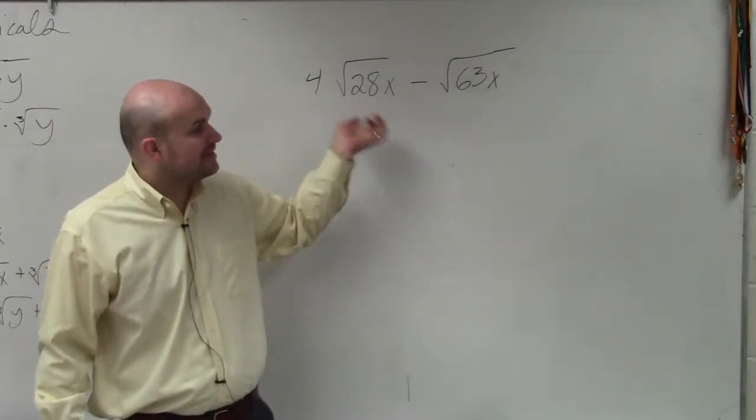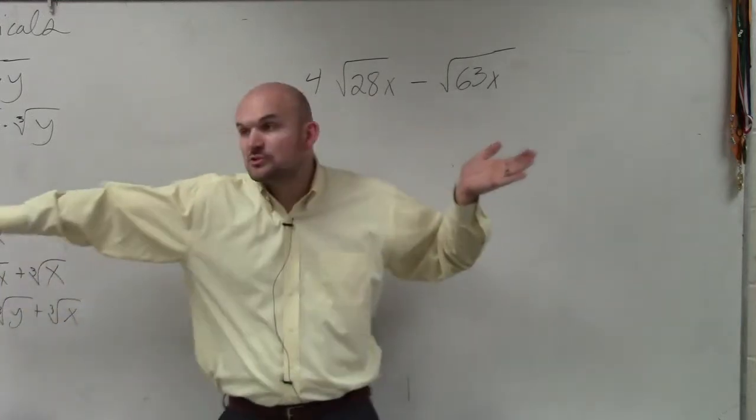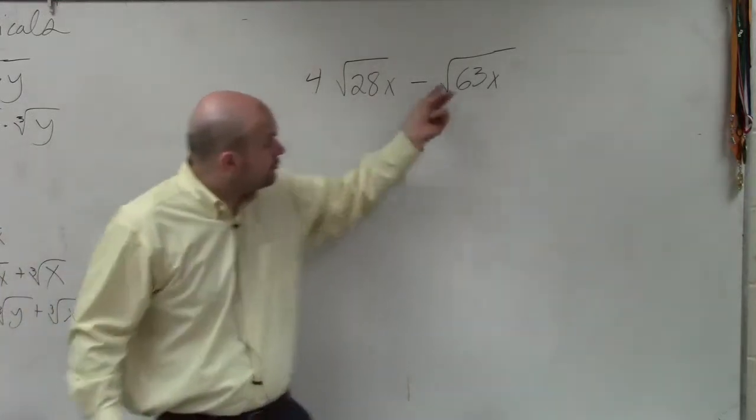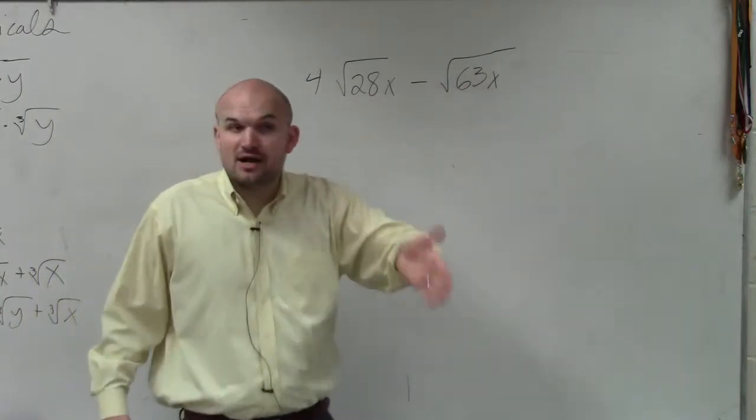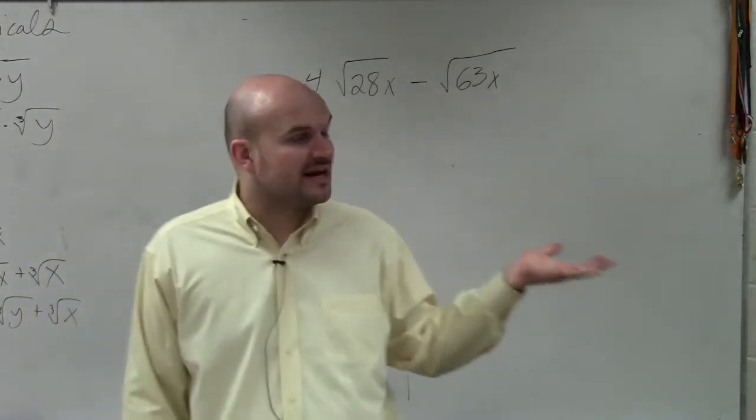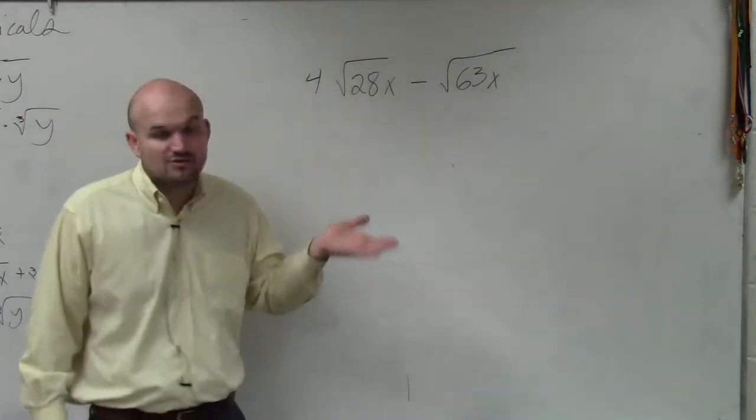Basically, what we need to do is simplify these. Using our rules of radicals, we can only combine when the root is the same, which it is, as well as the radicand. So, can I simplify these? How can I simplify the square root of 28x and square root of 63x?